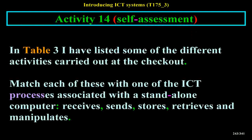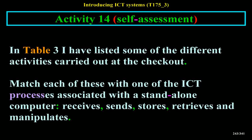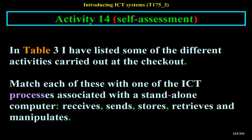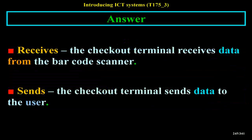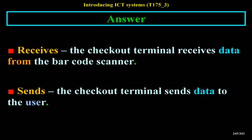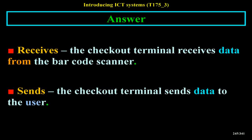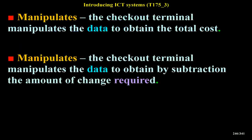Activity 14 Self-Assessment: In Table 3, I have listed some of the different activities carried out at the checkout — match each with one of the ICT processes: receives, sends, stores, retrieves and manipulates. Scanning a barcode = Receives. Providing a receipt = Sends (the checkout terminal sends data to the user). Calculating total cost of items purchased = Manipulates. Subtracting the total cost from money tendered by the customer = Manipulates (the checkout terminal manipulates the data to obtain by subtraction the amount of change required).